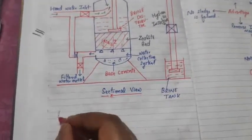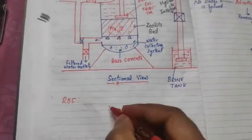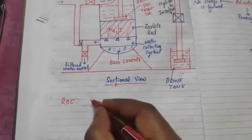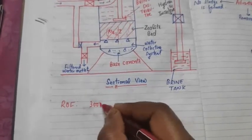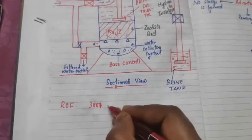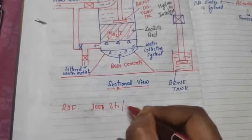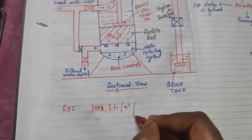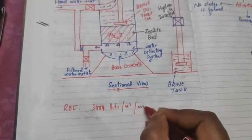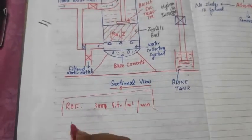The rate of filtration in the zeolite softener is 300 liters per square meter per minute.